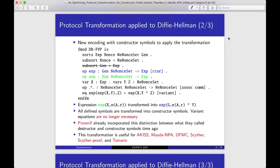The second step for the transformation is to apply a new encoding with constructor symbols. Here, we duplicate the operator S. The blue is the constructor, and the green one is like before, a defined symbol.